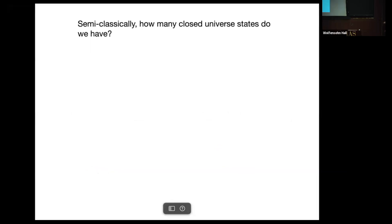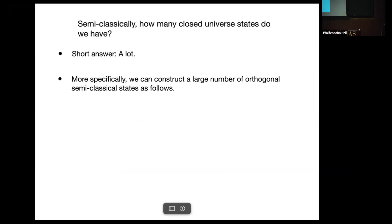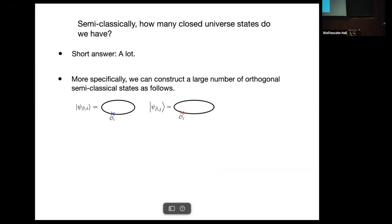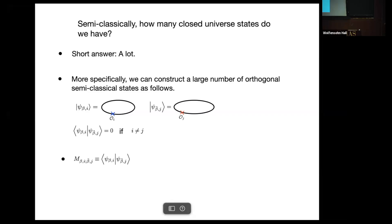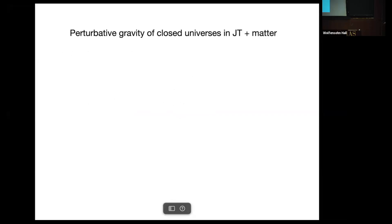One can ask semi-classically: how many closed universe states do we have? The short answer is a lot. More specifically, we can construct a large number of orthogonal semi-classical states as follows: you can choose different operators O_i and O_j such that their overlap vanishes. In particular, consider the matrix M defined as the inner product of these two states — the rank of M will be large.